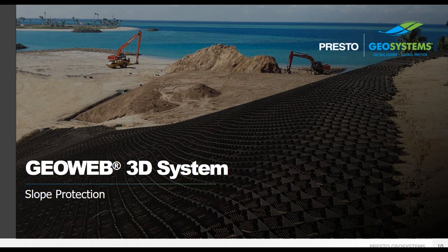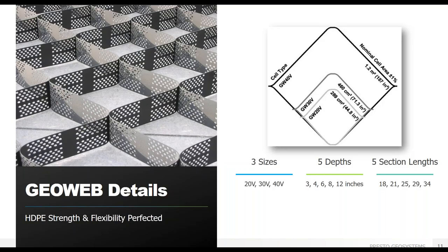With all that refreshed in our minds, we'll move on to describing the GeoWeb 3D system. The GeoWeb system consists of two main attributes. The first is cell size, and the cells come in three diameters — small, medium, and large — with heights of 3, 4, 6, 8, and 12 inches. Cell aperture and height are selected following an evaluation of project-specific needs and site conditions.